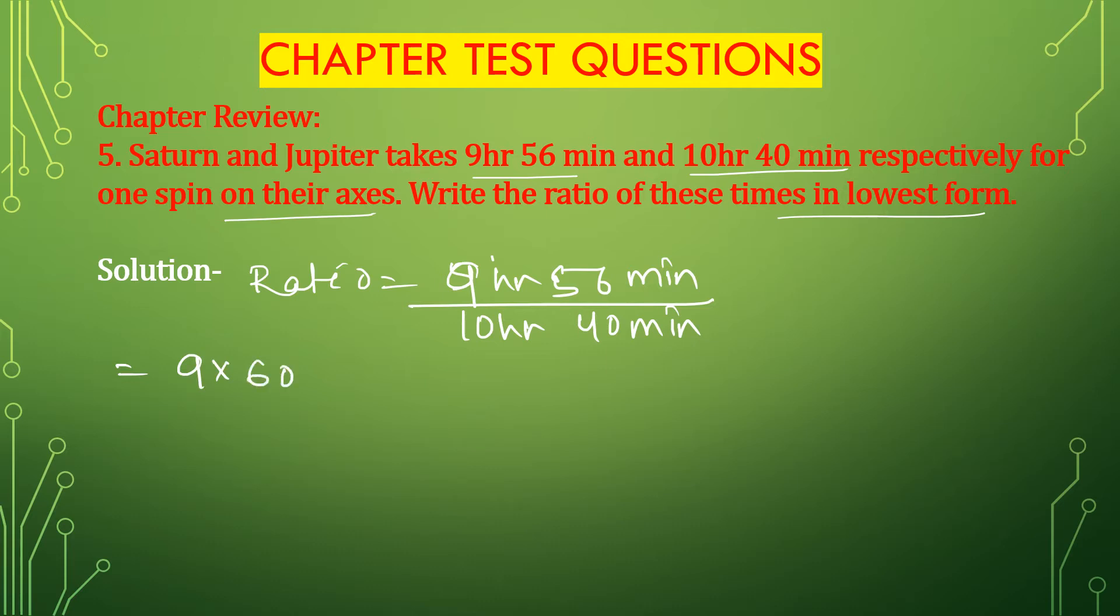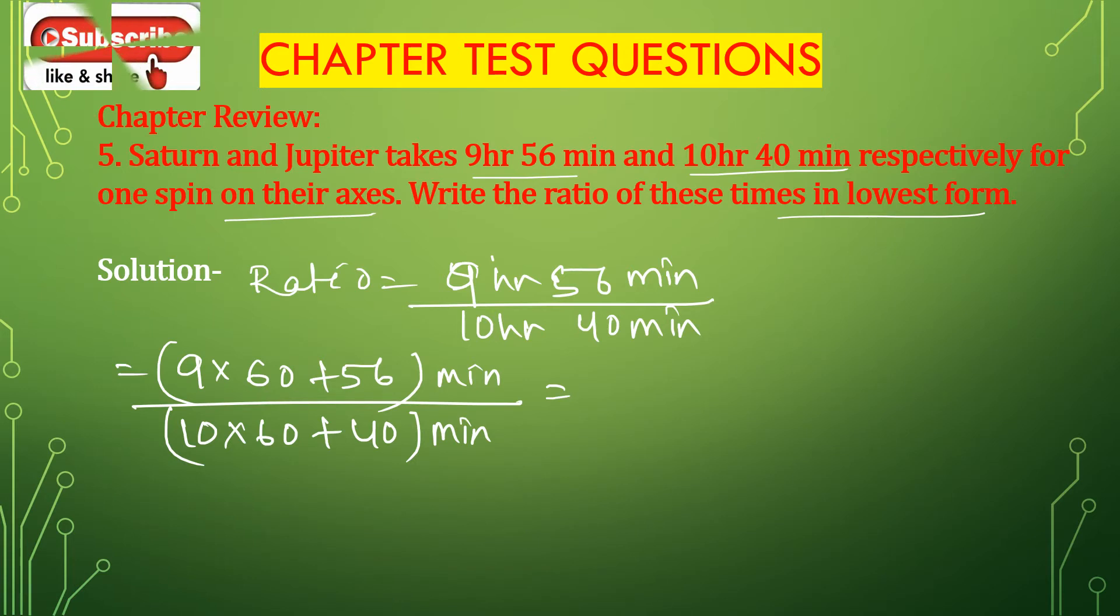9 multiplied by 60, since 1 hour is 60 minutes. So 9 multiplied by 60 plus 56 minutes divided by 10 multiplied by 60 plus 40 minutes. 9 multiplied by 60 is 540 plus 56. 10 multiplied by 60 is 600 plus 40, which is equal to 596 divided by 640 minutes.